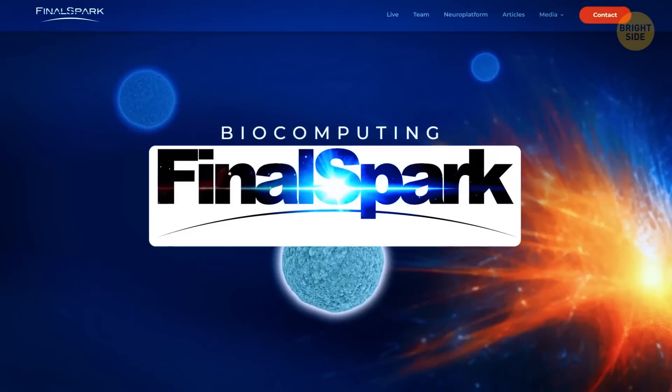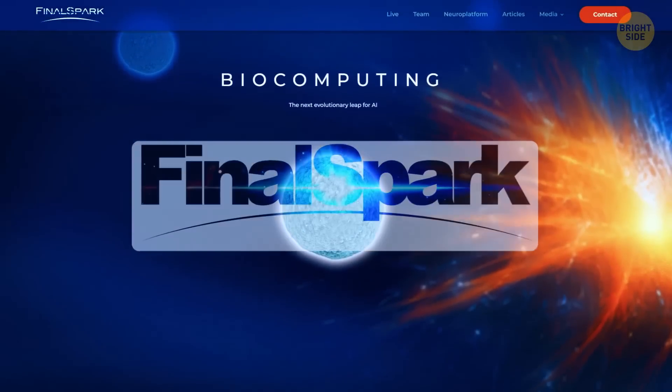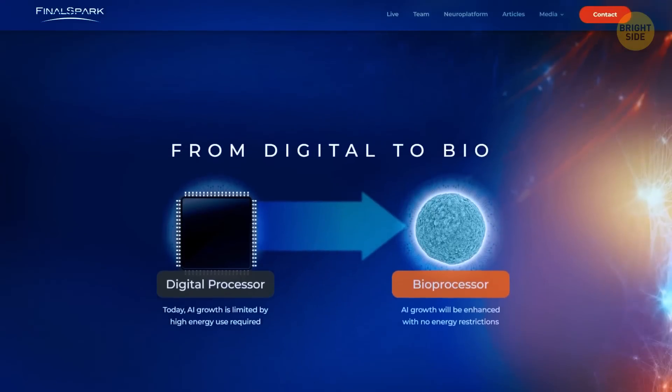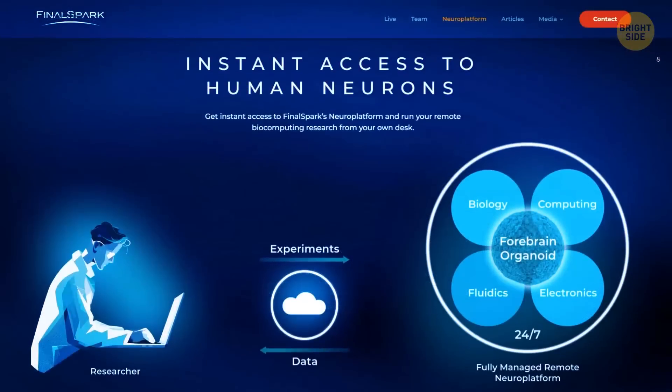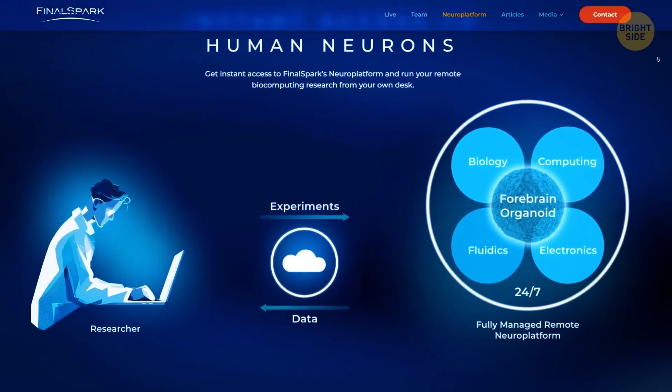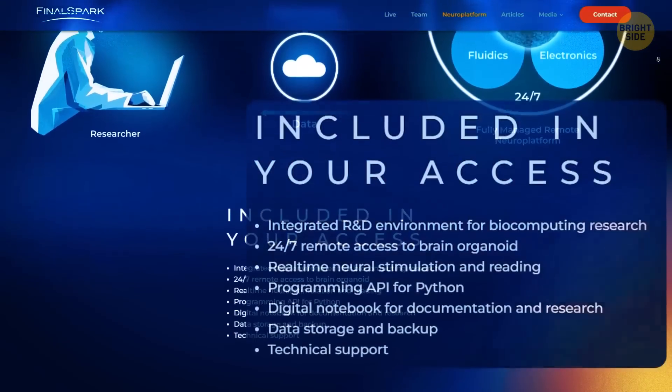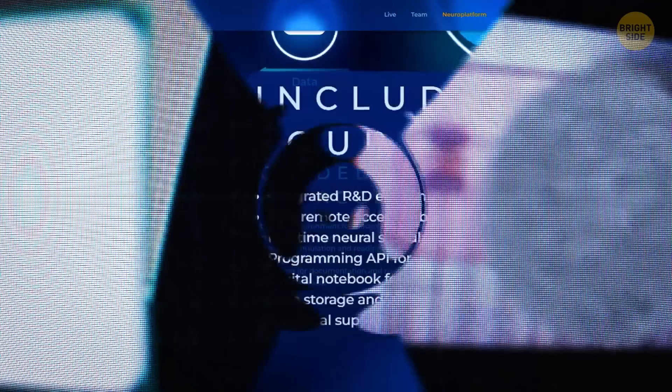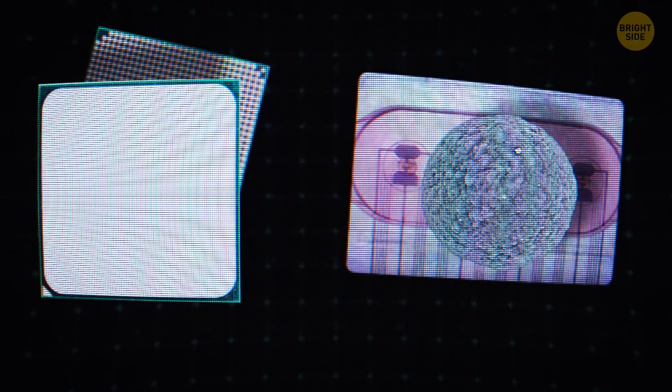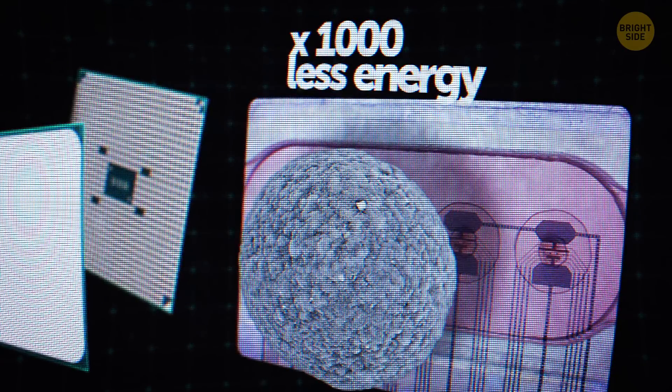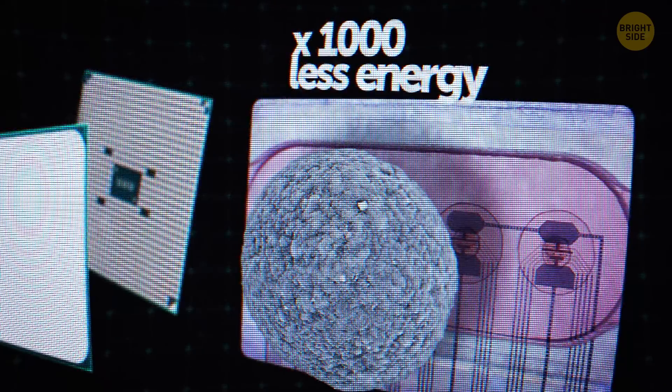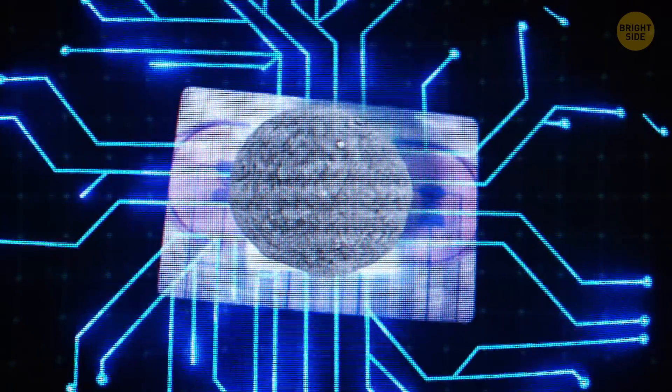One company in Switzerland called FinalSpark has created a special computer platform using human brain organoids to help process information. You can rent this platform online for $500 a month if you're a scientist. The main goal is to create AI that uses 100,000 times less energy than the powerful artificial intelligence systems we have today.